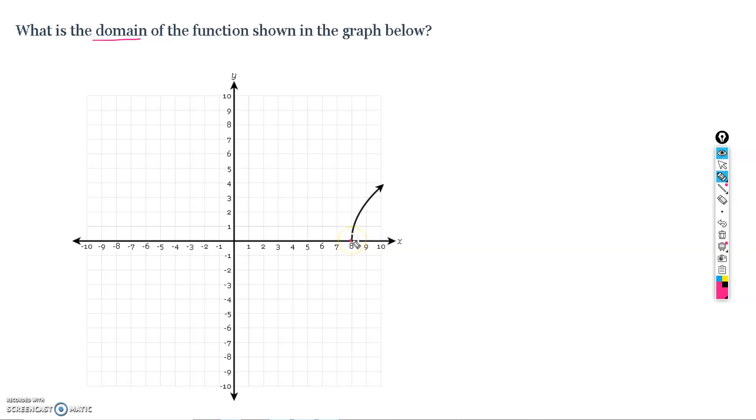And it looks like it's actually touching there. So, this function starts at positive 8, and it's including positive 8. So, that gets the square bracket. And as we follow it on to the right, it looks like, oh, there's an arrow there. That means it's going to go all the way to positive infinity. And infinities always get a curved bracket. So, the domain of this function is positive 8 to positive infinity, because it looks like, again, this function doesn't even start until positive 8.